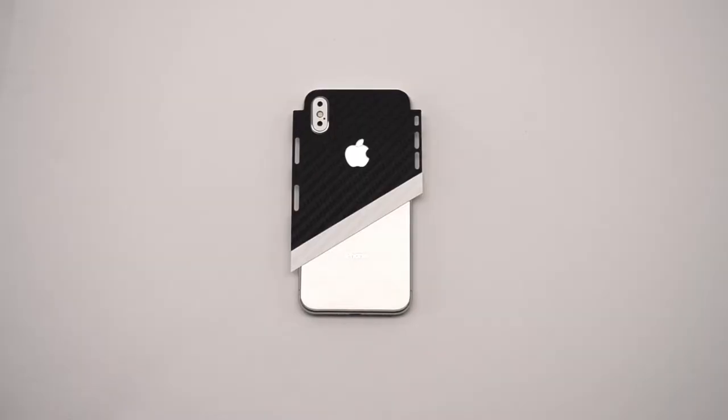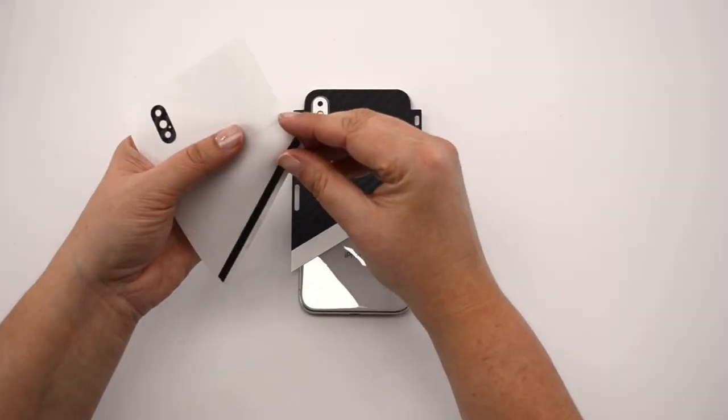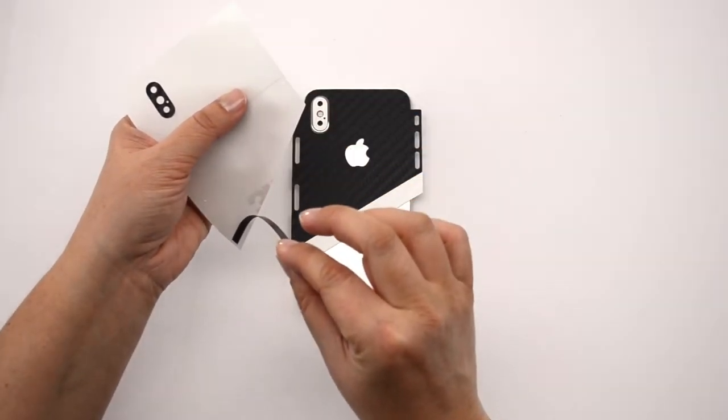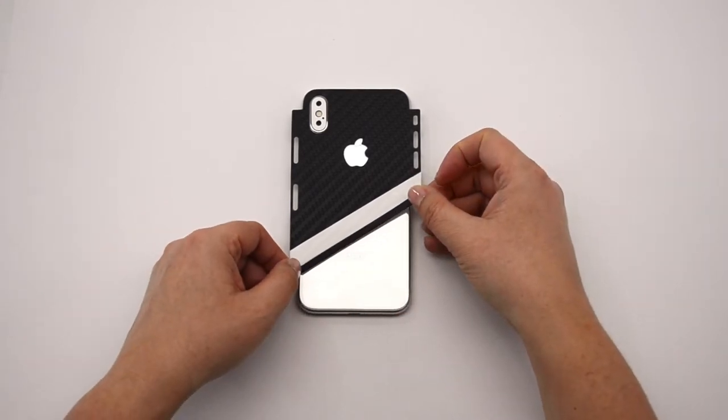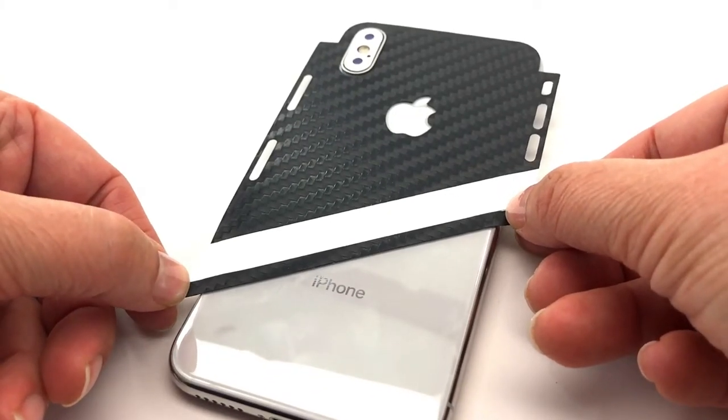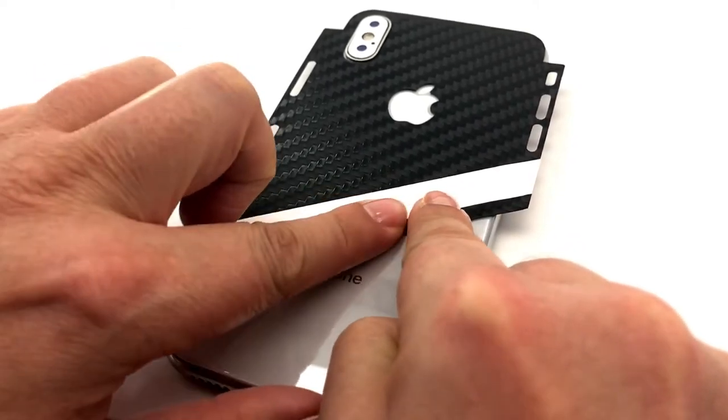Repeat the last step with the smallest piece, but be careful not to stretch it. Once it's lined up correctly, create a tack point in the center and smooth it out.